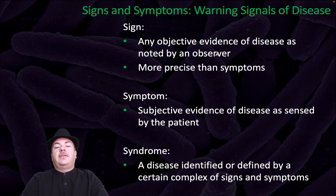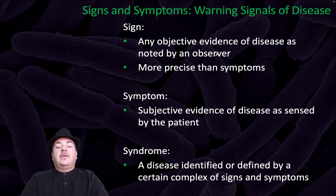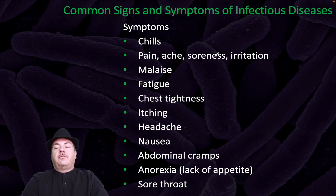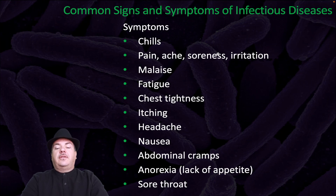Signs and symptoms are warning signals of disease. A sign is objective evidence of disease as noted by an observer and is more precise than symptoms. A symptom is subjective evidence of disease as reported by the patient. A syndrome is a disease defined by a certain complex of signs and symptoms. Common signs of infectious disease include fever, bacteremia, microbes in tissue fluids, chest sounds, skin eruptions, leukocytosis, leukopenia, swollen lymph nodes, abscesses, tachycardia, and antibodies in serum. Common symptoms include chills, pains, aches, soreness, irritation, malaise, fatigue, chest tightness, itching, headache, nausea, abdominal cramps, anorexia, and sore throat.